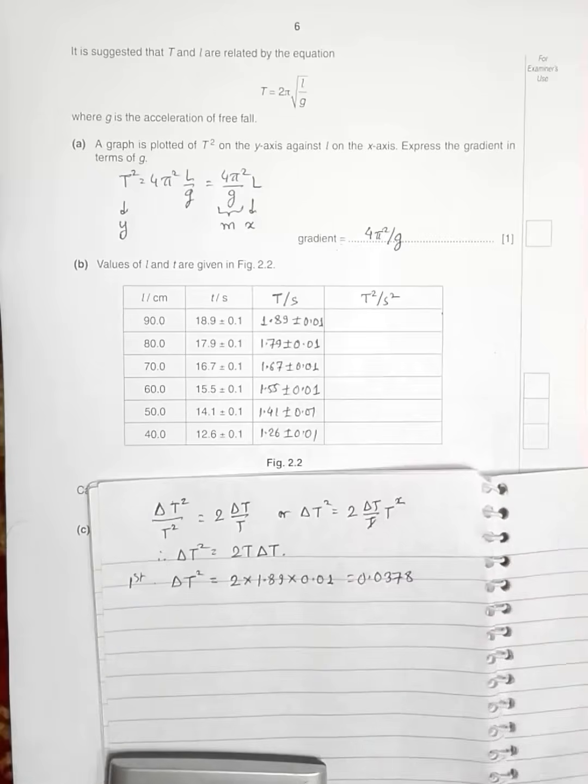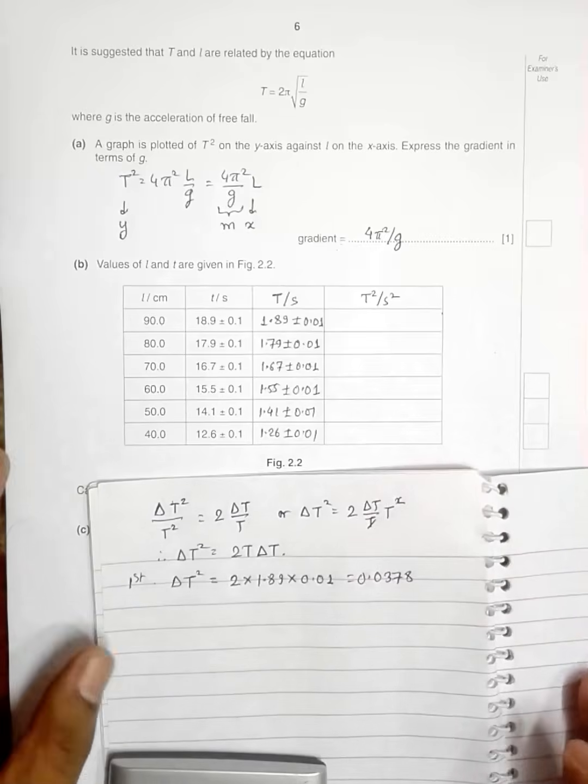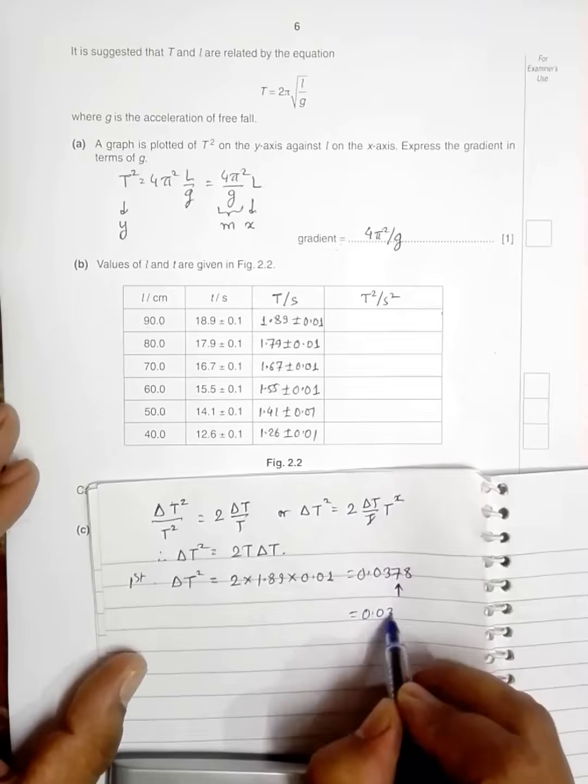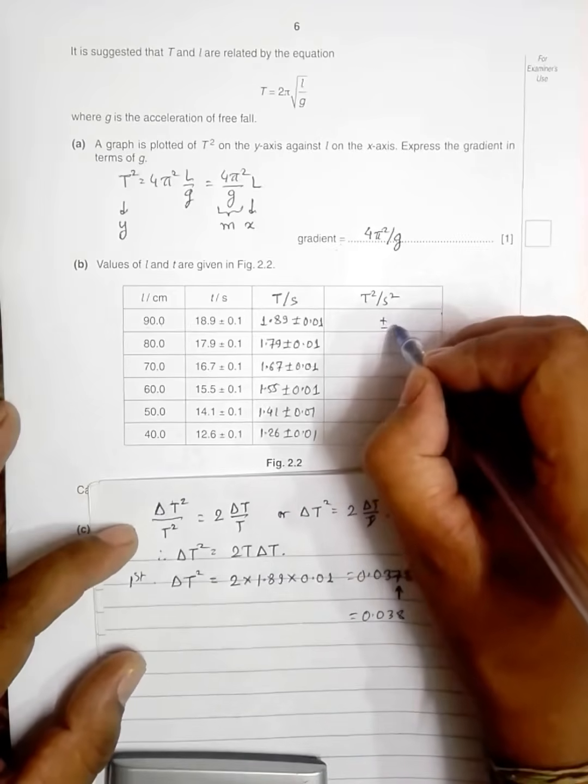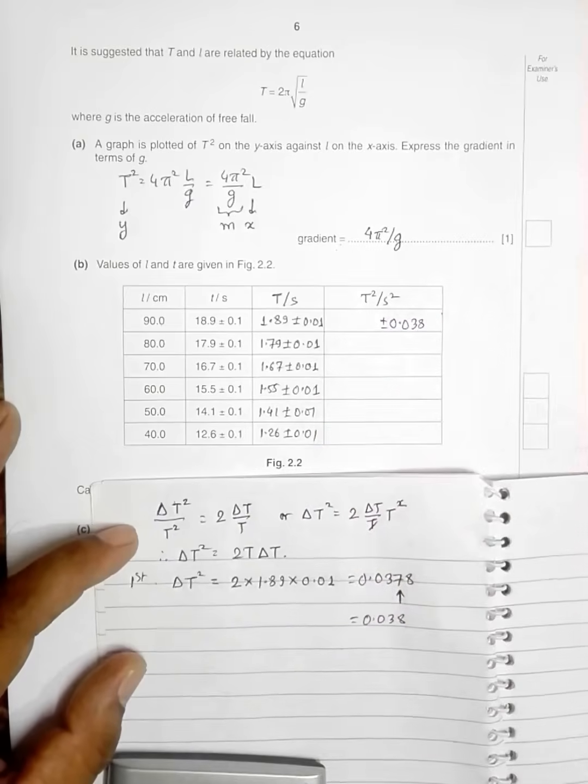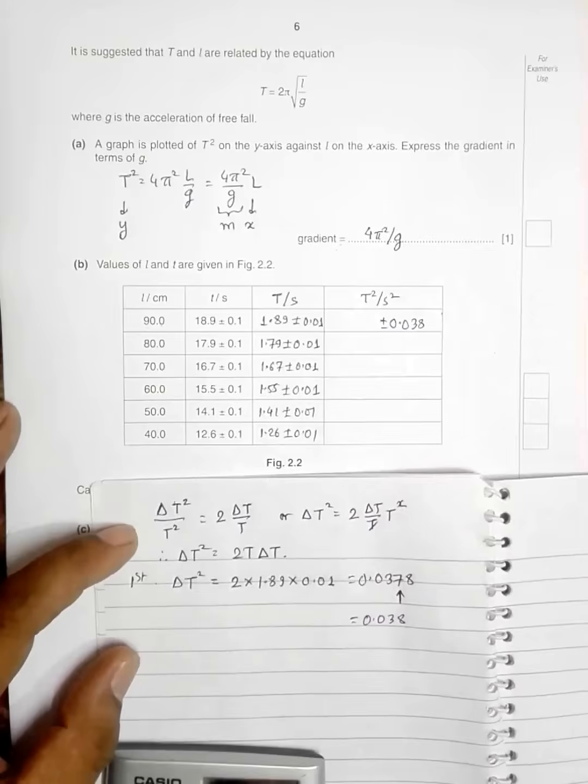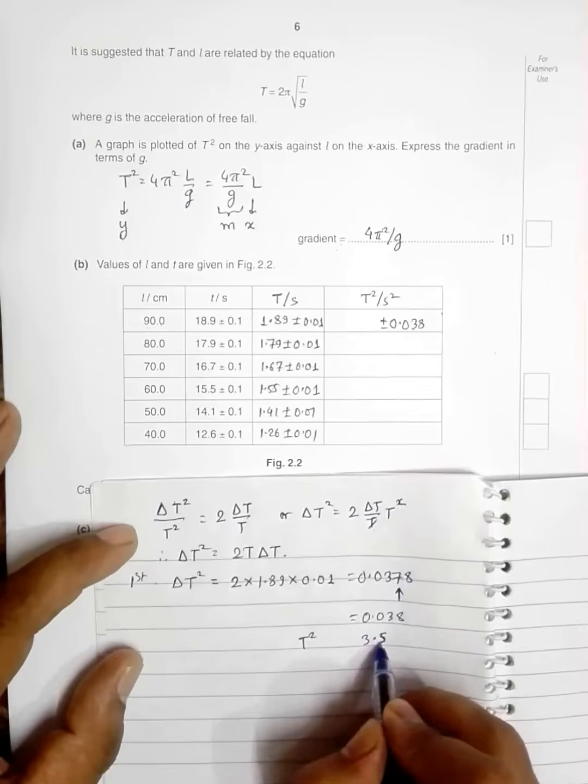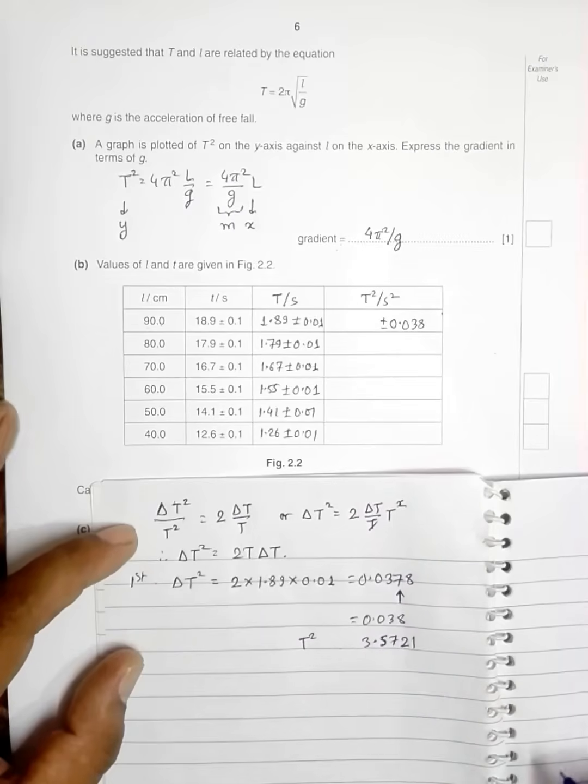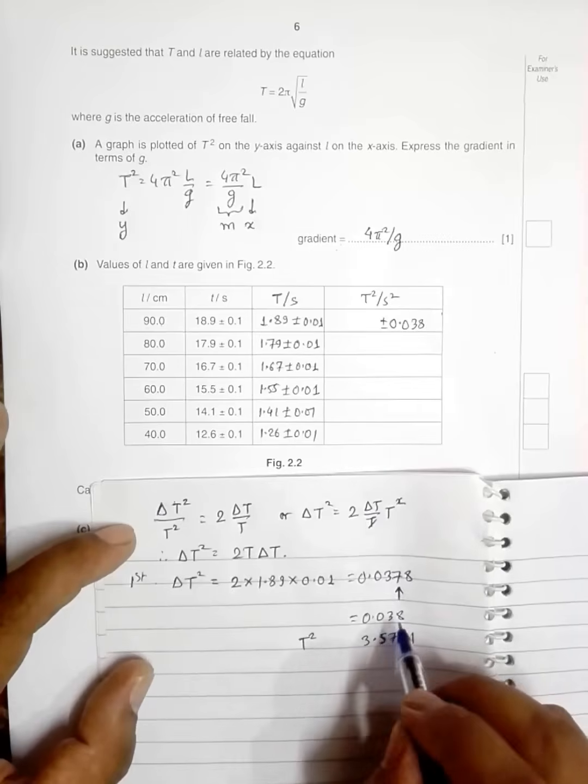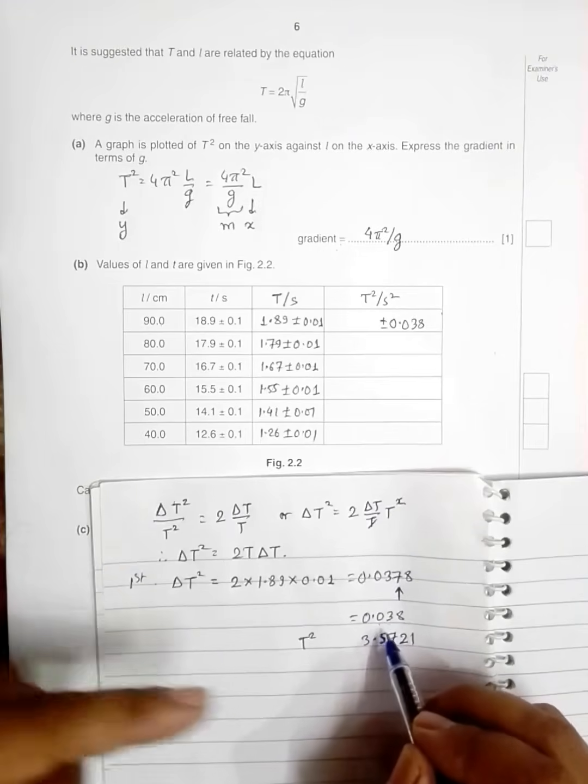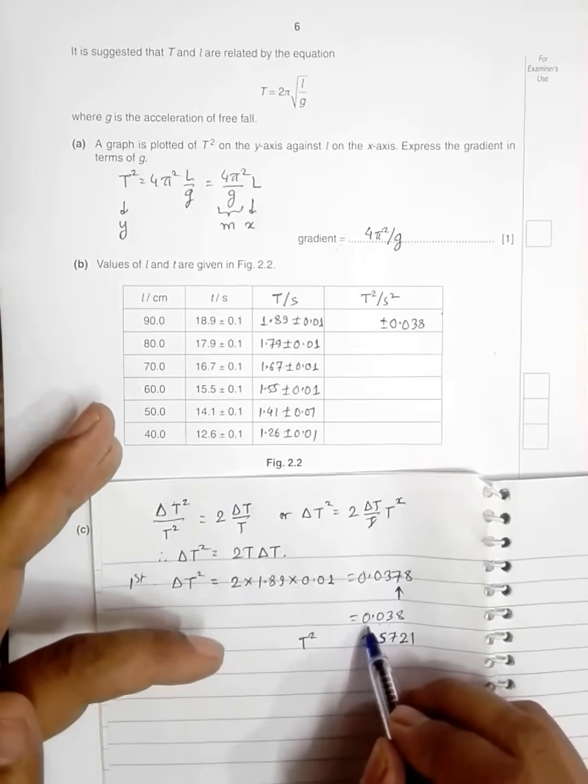That's why I am using 2 sf for better precision in the graph that I draw. For that I have to round it up here. So this becomes 0.038. So I write here ± 0.038. Then let us go for T². T² will be equal to 1.89², so T² = 3.55721.